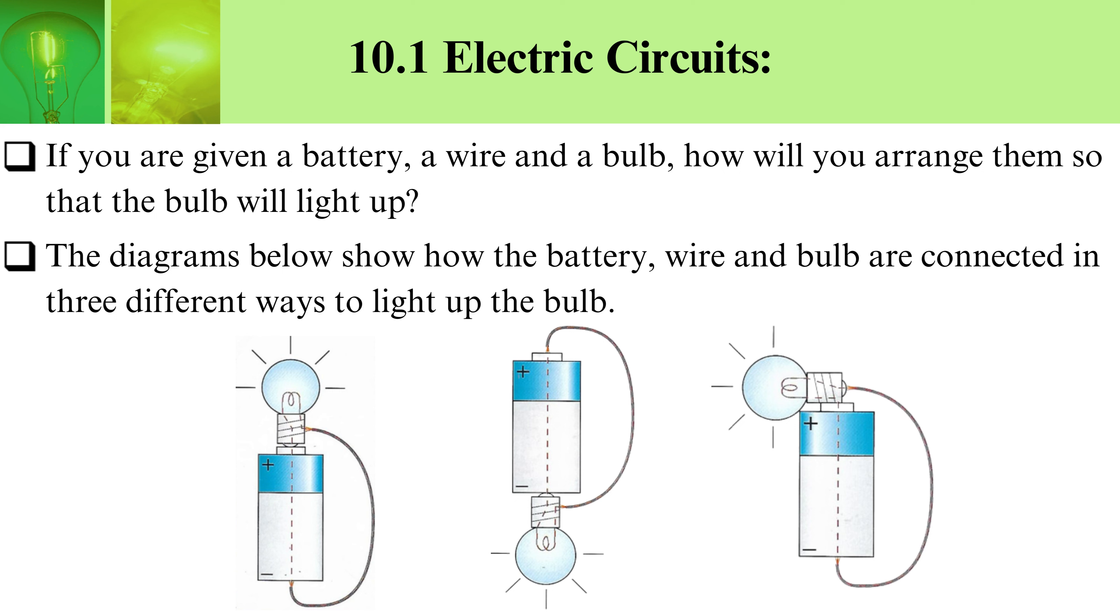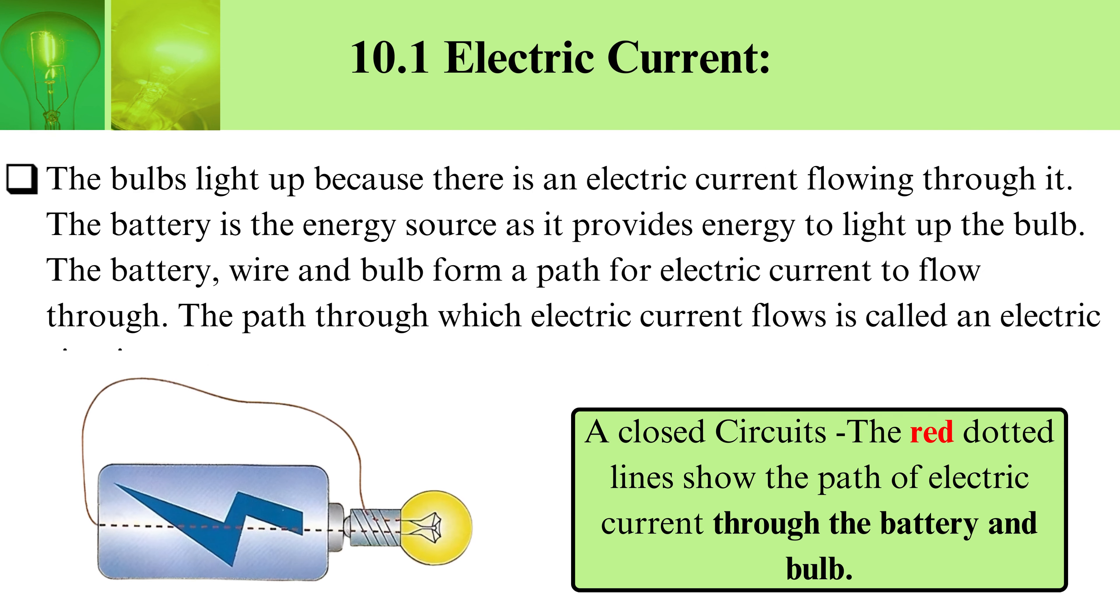Electric circuit: If you are given a battery, a wire, and a bulb, how will you arrange them so that the bulb will light up? The diagram below shows how the battery, wire, and bulb are connected in three different ways to light up the bulb.